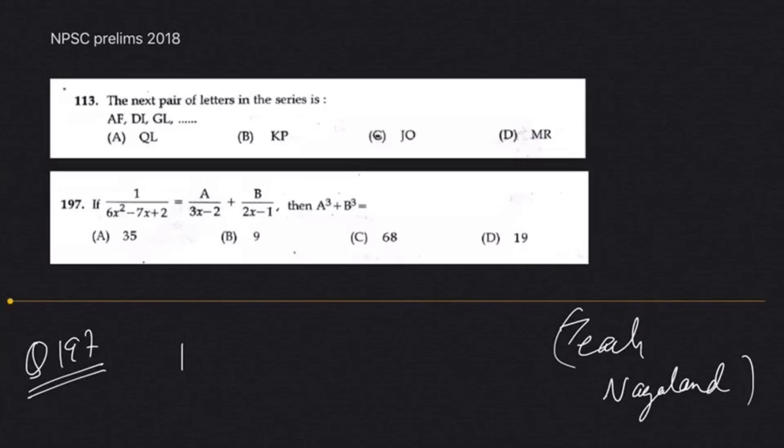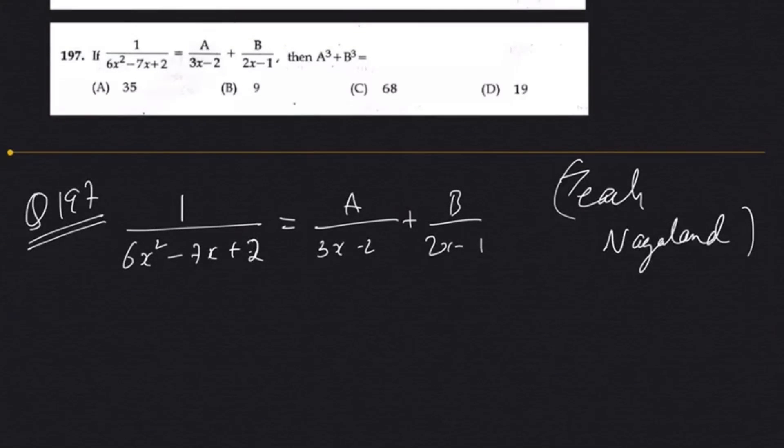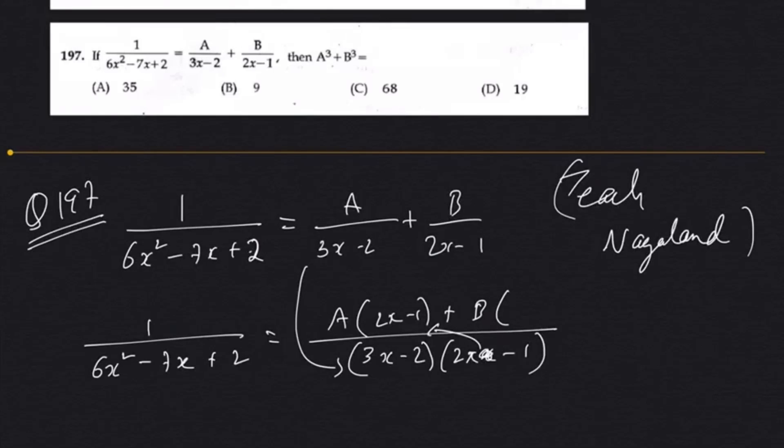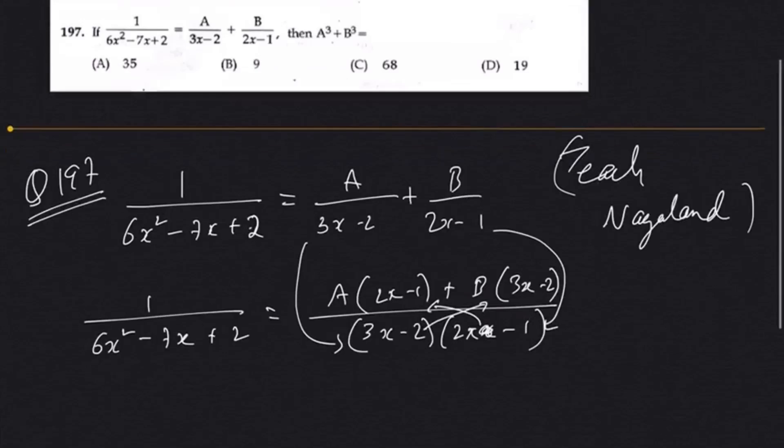Now question number 197, this is a problem on partial fractions. That is (6x² - 3x + 2)/(6x² - 7x + 2) equals A/(3x - 2) + B/(2x - 1). I think we'll have to do a little bit of solving here. By taking the LCM, we can skip a lot of steps, but I'll show you the whole procedure. By taking the LCM (3x - 2)(2x - 1), it will be A(2x - 1) + B(3x - 2).